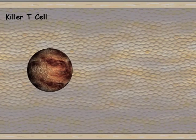The killer T cell punches a hole in the affected cell and releases all the juices.